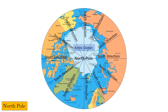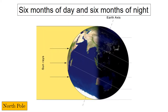The North Pole doesn't have sunrises and sunsets every day because the earth is tilted on its axis by approximately 23.5 degrees. So at the poles, the sun rises and sets only once a year.